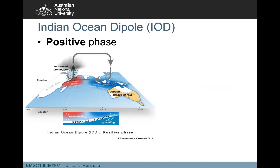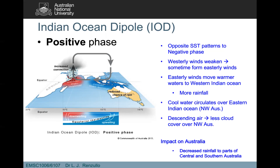In the positive phase, warmer than normal waters occur off the African coast with increased convection due to those warmer waters, while cooler than normal waters sit off the north coast of Australia. It's the opposite pattern to the negative phase. Westerly winds weaken and sometimes flow easterly, moving warmer waters to the western Indian Ocean giving more rain there, while descending dry air reduces cloud cover over northwest Western Australia. The impact of a positive phase Indian Ocean Dipole is a decreased chance of rain across central and southern Australia.